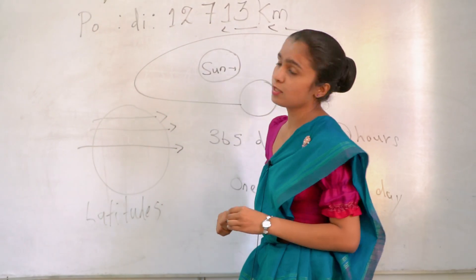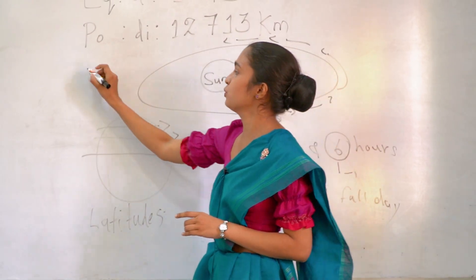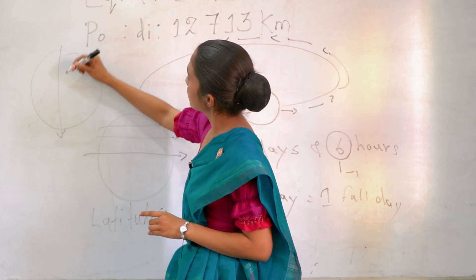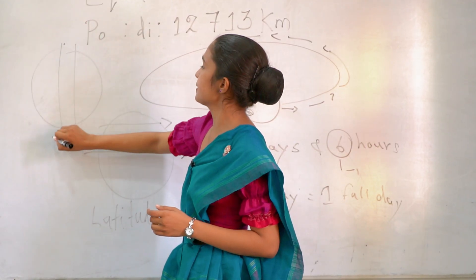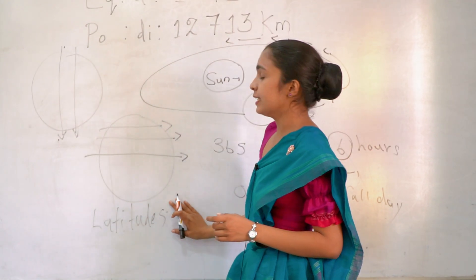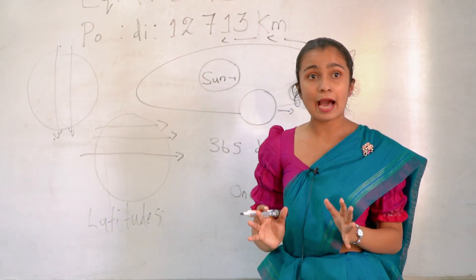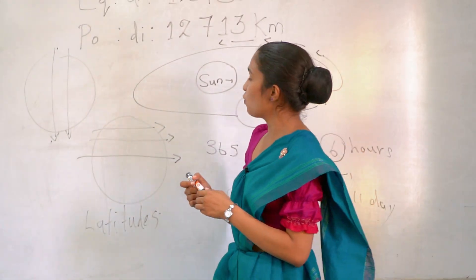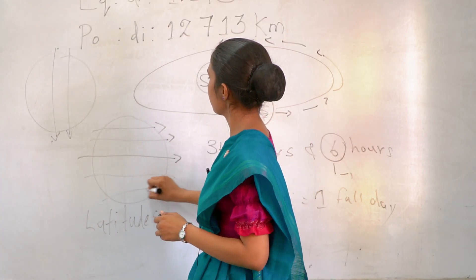And also we have longitudes. So these are drawn to north pole to south pole. In here latitudes, we have seven main latitudes. The first one is here. First one is 90 degrees. We have north pole.